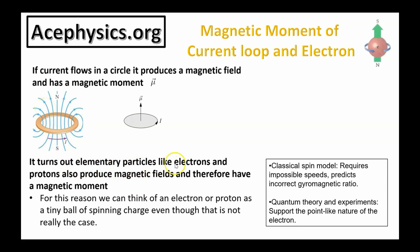Elementary particles like electrons and protons also produce magnetic fields, and therefore have a magnetic moment. For this reason, we can think of an electron or proton as a tiny ball of spinning charge, even though that's not really the case. A classical model, where the electron is treated as a spinning sphere, would imply that points on the surface move faster than the speed of light, violating the principle of relativity.